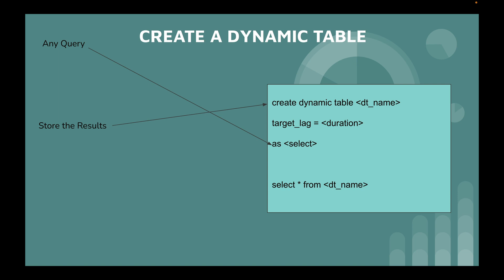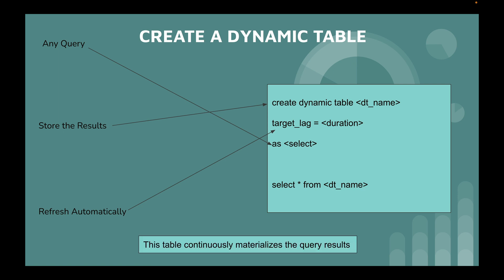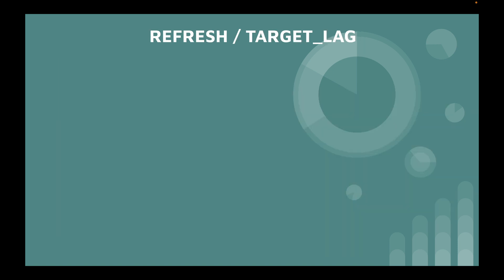The dynamic table stores the query results and refreshes automatically based on the TARGET_LAG you have given. This table continuously materializes the query results based on the target lag, so let's understand in more detail what exactly the refresh and the TARGET_LAG mean.